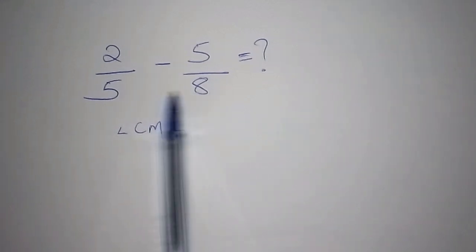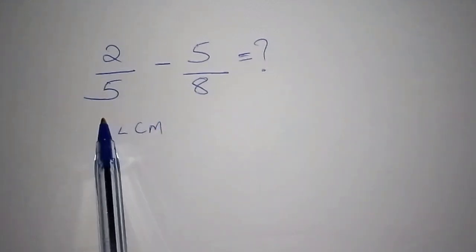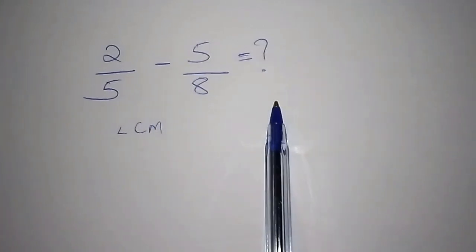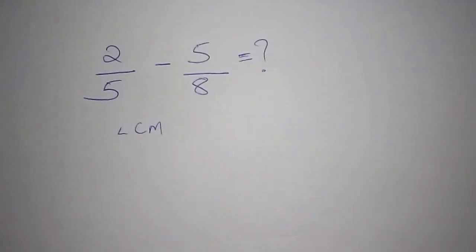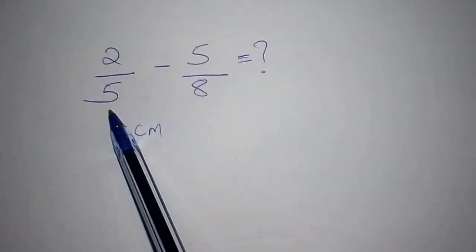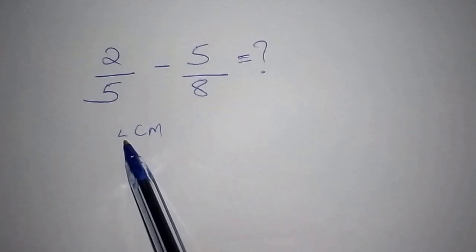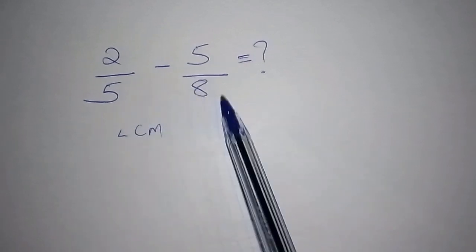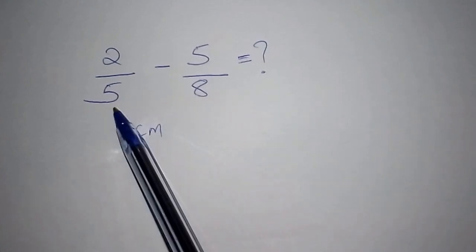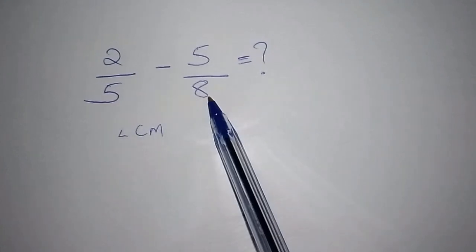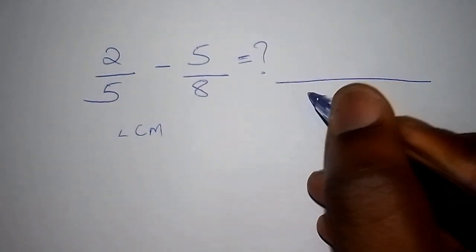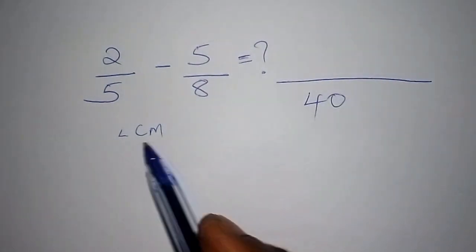Let's begin with subtraction. This is 2 over 5 minus 5 over 8. What is the best math trick to solve this kind of problem? Because the denominators are 5 and 8, we must find the LCM of 5 and 8. We're just going to multiply 5 by 8.